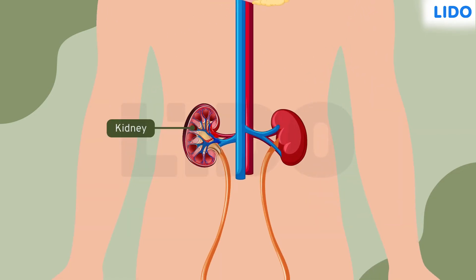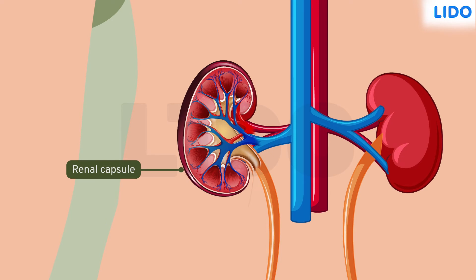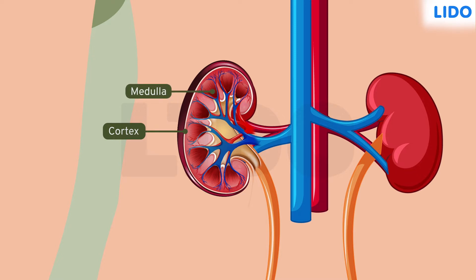The kidney is a reddish, bean-shaped organ that is externally protected by a layer called the renal capsule. Internally, the organ is divided into three regions. The outer, darker region is called the cortex. The middle, lighter region is called the medulla. And the innermost region is called the renal pelvis.